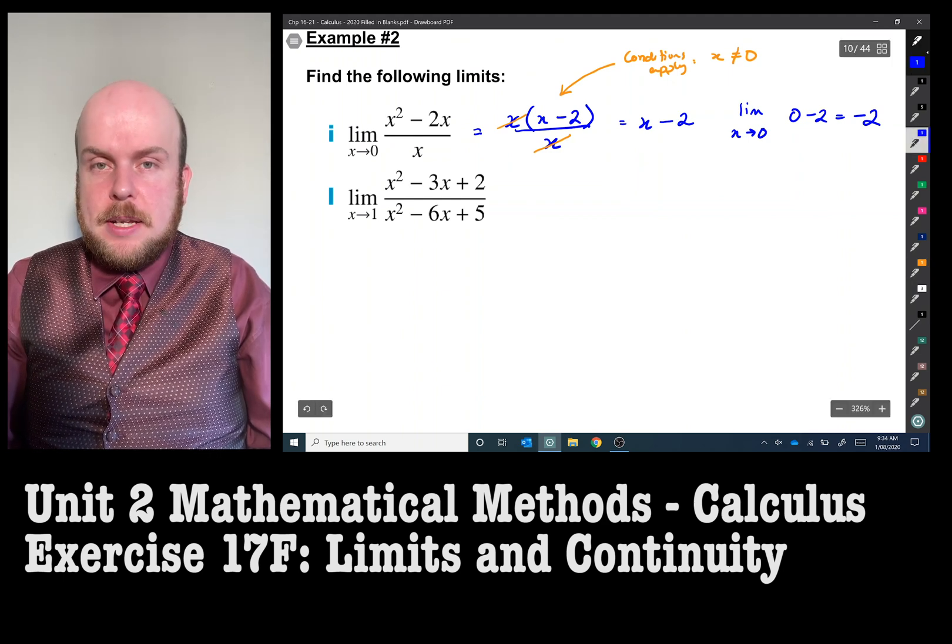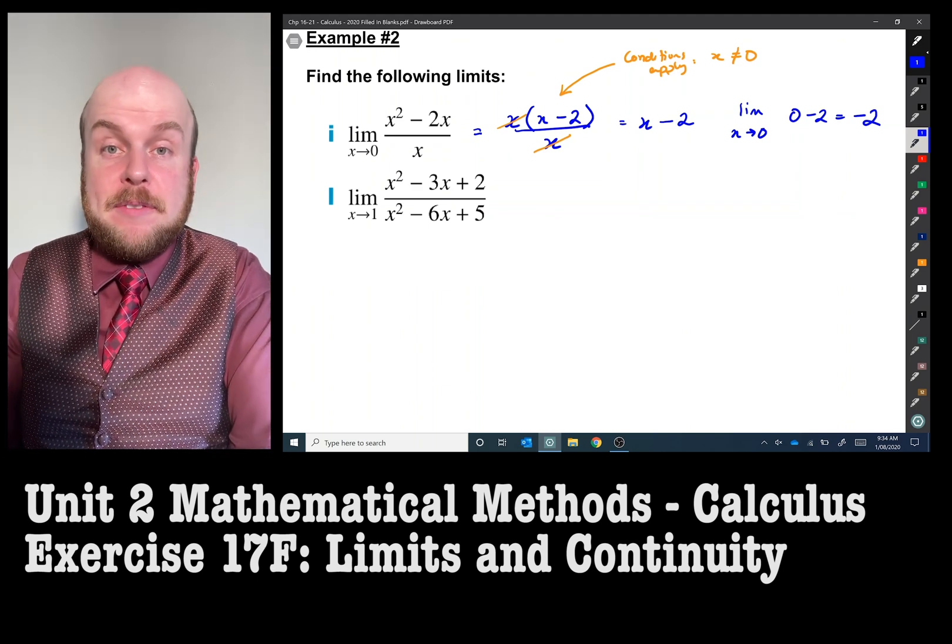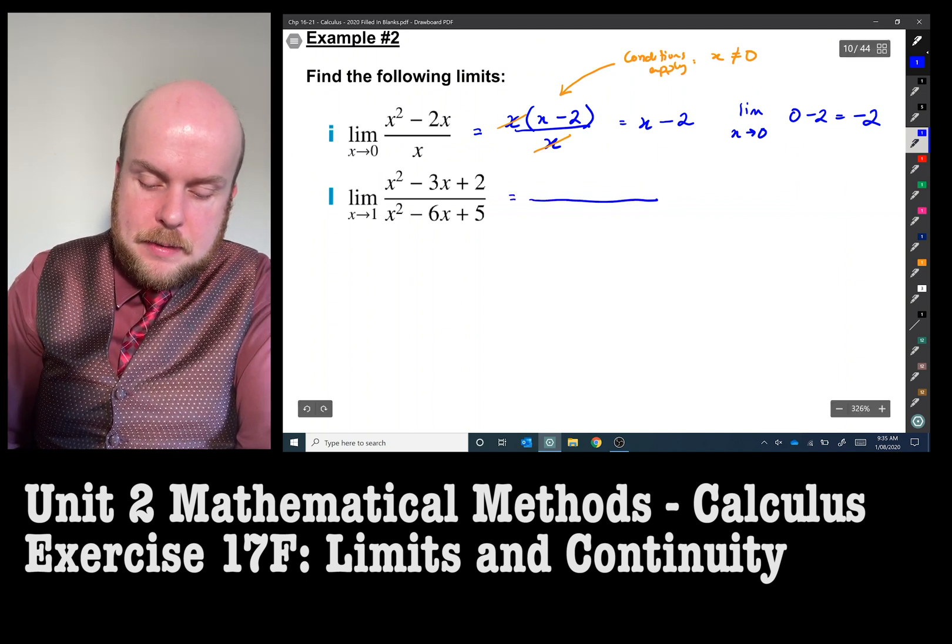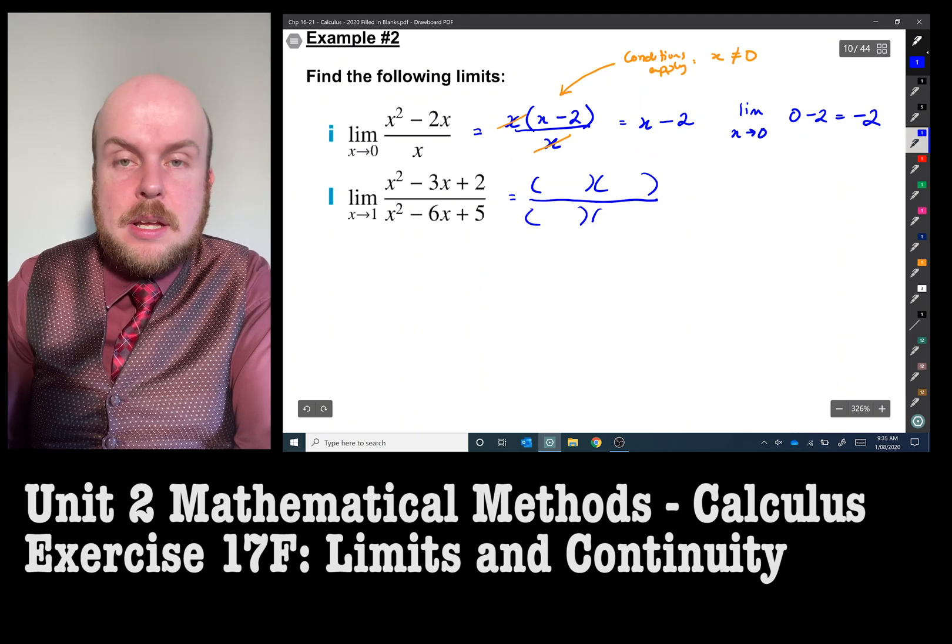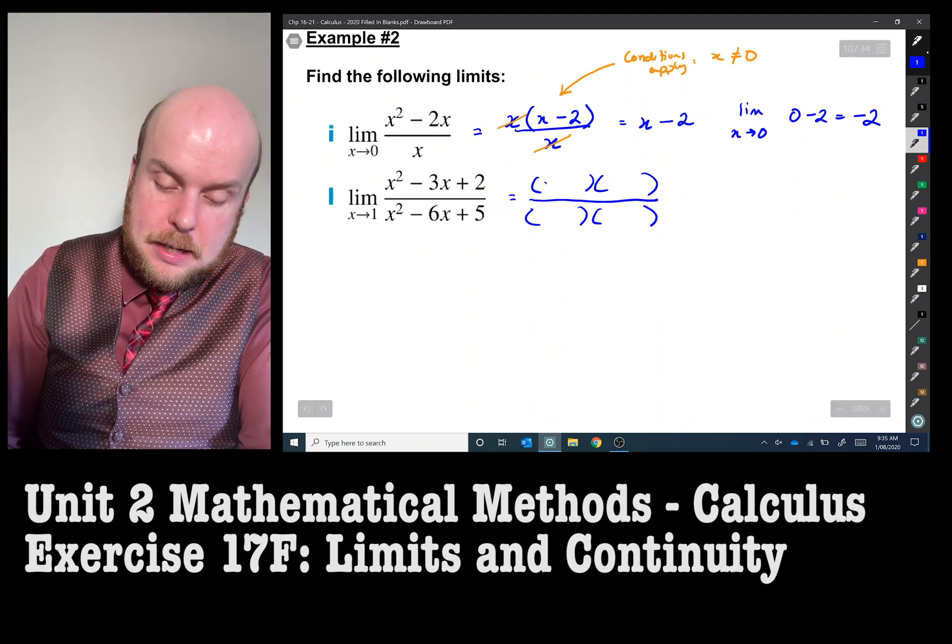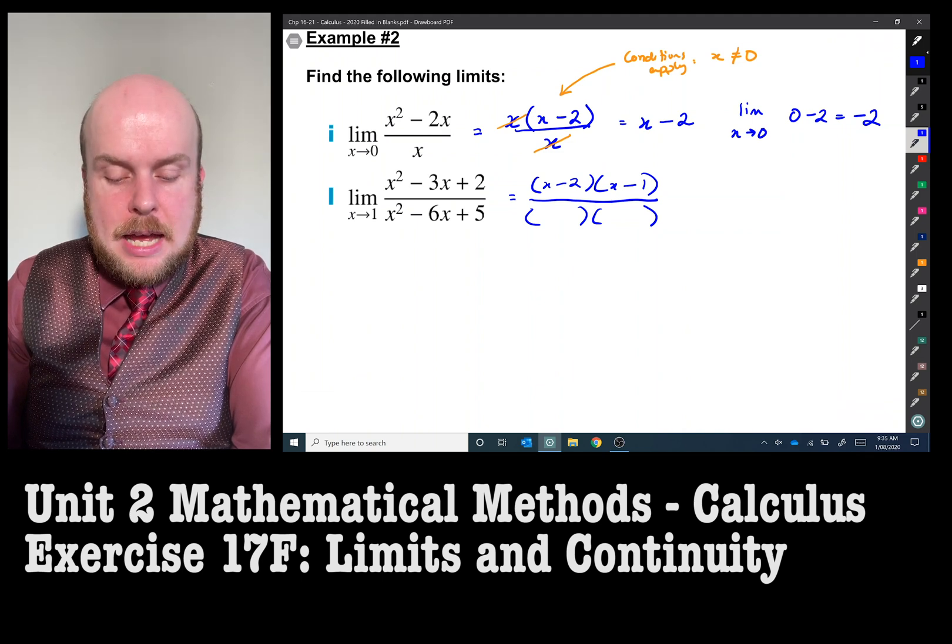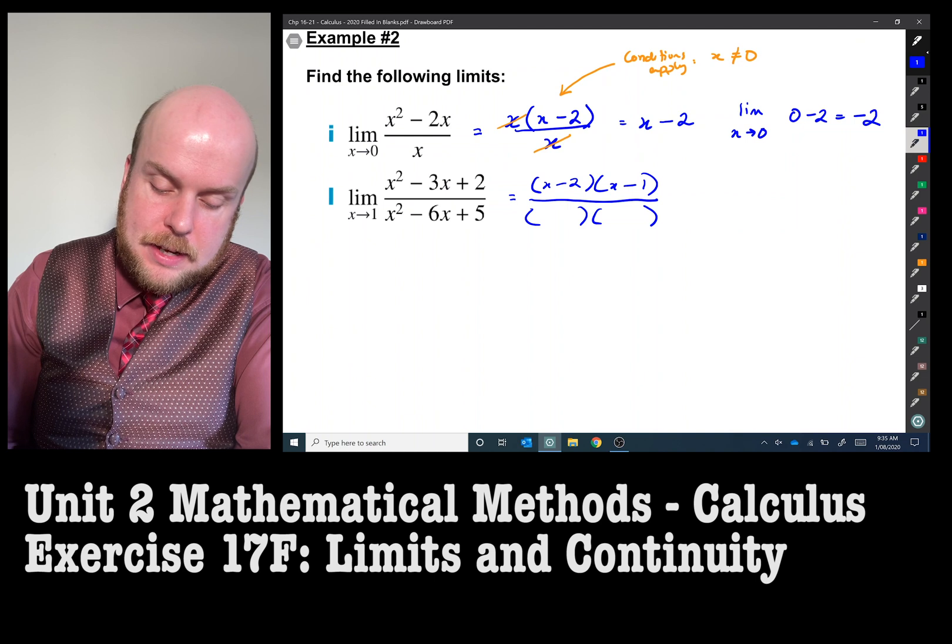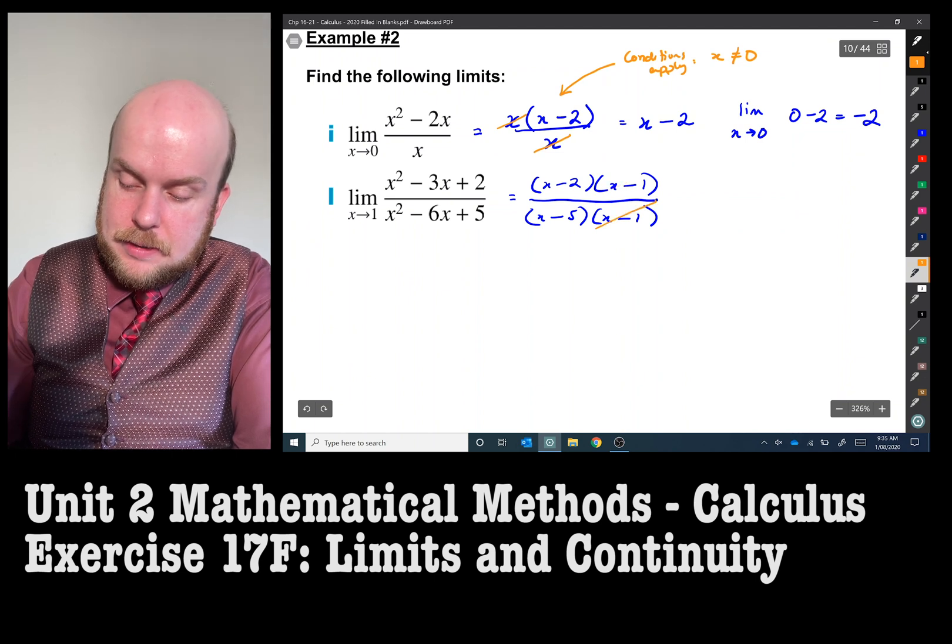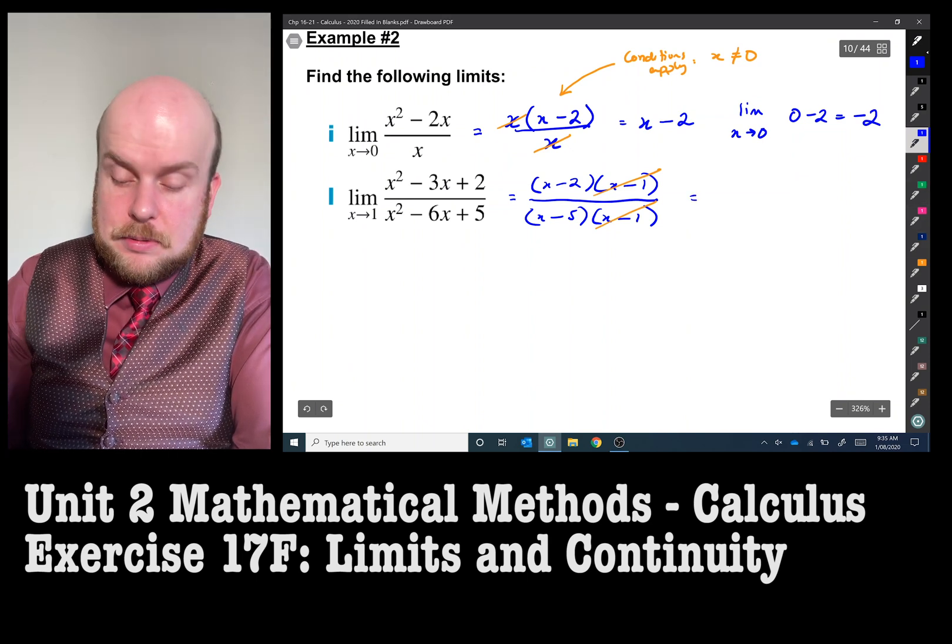With part ii we've got two quadratics so if it's anything similar to the example above we probably have to do some sort of simplification and by simplification I mean factorization. So hopefully there might be a couple of brackets that we can chuck the numerator and denominator in. Two numbers that multiply together to get 2 add together to get negative 3, that's going to be minus 2 and minus 1. Two numbers that multiply together to get 5 add together to get negative 6, minus 5 and minus 1. Well we can see here we can simplify those equations.